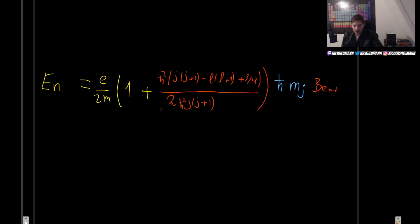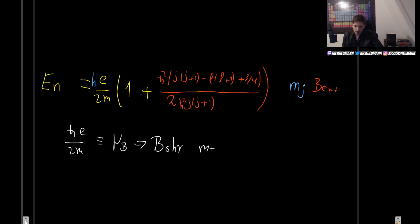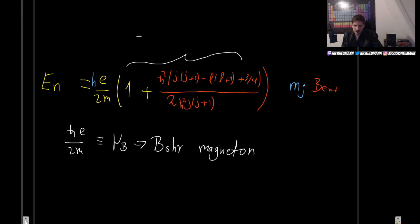These are the new energy levels due to the Zeeman effect. We can rewrite by defining ℏ times e divided by 2m, which is called the Bohr magneton, written as μ_B. It is called magneton because it is the part associated with the magnetic dipole moment. The remaining piece is the Landé g-factor.